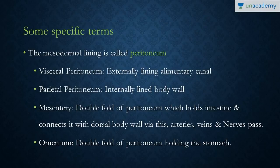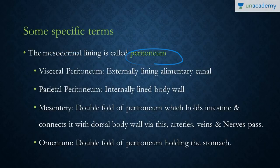Now some specific terms you should know. The mesodermal lining that covers the body cavity or the coelom is termed as the peritoneum. There are two types of peritoneum: visceral peritoneum and parietal peritoneum.